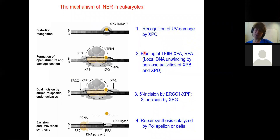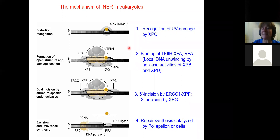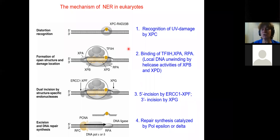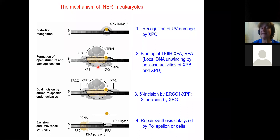In humans and other eukaryotes, NER works more or less the same way — a surveillance complex finds damage, brings similar types of proteins, performs nicking and resynthesis. An interesting addition in eukaryotes is transcription-coupled repair: because our cells have so much DNA that we cannot rely on a caterpillar scanning everything, we prioritize repairing places that are being transcribed. When the transcription machinery bumps into a damaged site, the repair complex is brought right there, saving transcription and then repairing the rest.